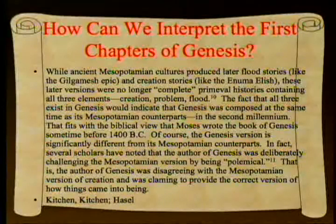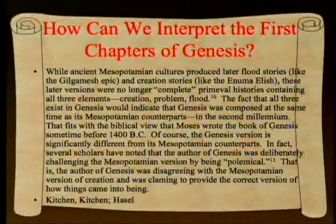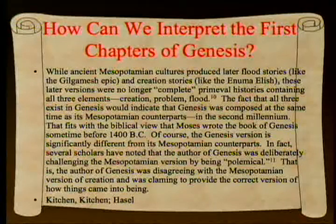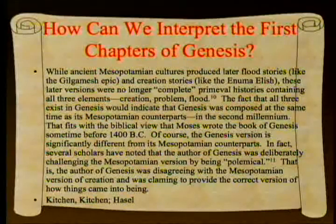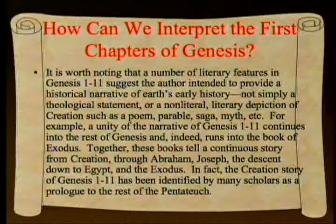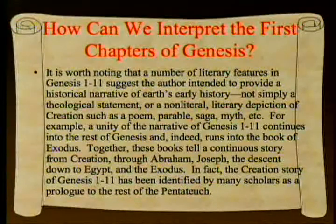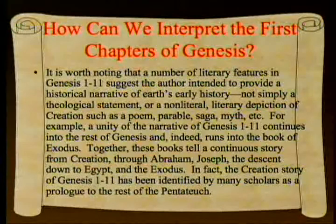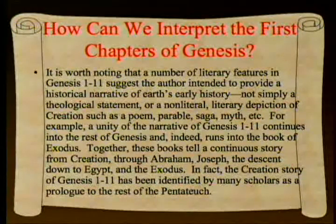Several scholars have noted that the author of Genesis was deliberately challenging the Mesopotamian version by being polemical—a reference to a piece by Gerhard Hasel in the Evangelical Quarterly. That is, the author of Genesis was disagreeing with the Mesopotamian version of creation and claiming to provide the correct version. It is worth noting that a number of literary features in Genesis 1–11 suggest the author intended to provide a historical narrative of Earth's early history, not simply a theological statement or non-literal literary depiction such as a poem, parable, saga, or myth. A unity of the narrative of Genesis 1–11 continues into the rest of Genesis and indeed runs into the book of Exodus.